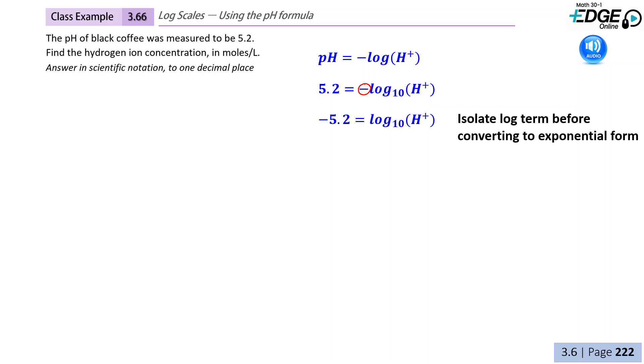Bring it over to the left side of the equation. Now we're ready to rewrite this in exponential form, so base 10 to the power of negative 5.2 is equal to our hydrogen ion concentration.